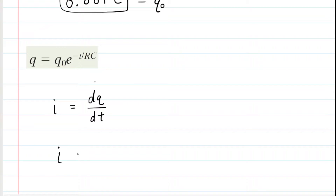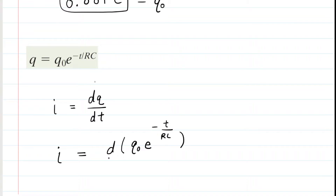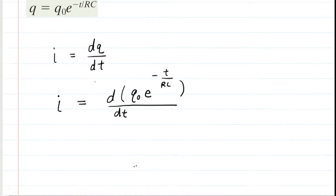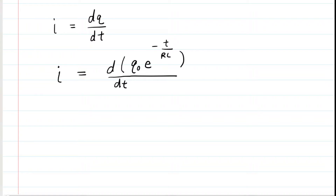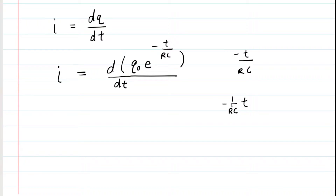The current equals the derivative of the charge equation, which is q₀ times e to the negative t over RC, differentiated with respect to time. It's useful to rewrite negative t over RC as negative 1 over RC multiplied by t, because R and C are constants, so negative 1 over RC is itself a constant. When you differentiate this term, you keep the constant and multiply by the derivative of t, which is just 1.